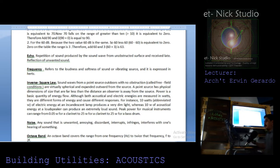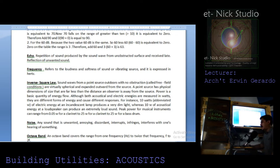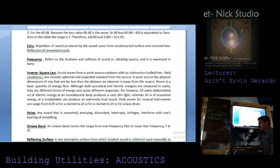Echo is the repetition of sound produced by a sound wave from an unobstructed surface, received late. Echo is the reflection of unwanted sound. Frequency refers to the loudness and softness of a sound or vibrating source, expressed in hertz. The inverse square law describes sound behavior from a point source.